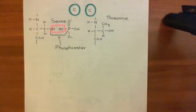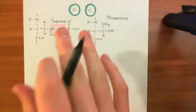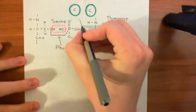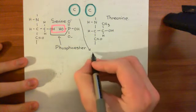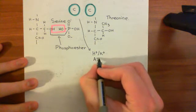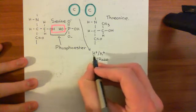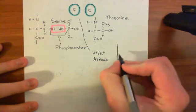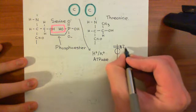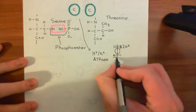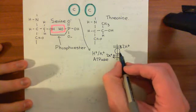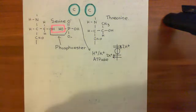Overall, activation of the H2 receptor has led to the activation of these catalytic subunits. What these catalytic subunits are going to do is phosphorylate and activate the proton-potassium ATPase — the protein which exchanges two protons for two potassium ions. It pumps two protons out into the canaliculi and in exchange brings two potassium ions back in, using ATP each time.